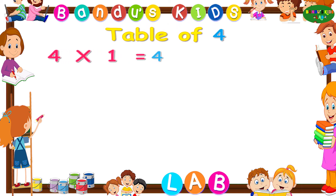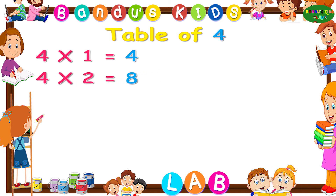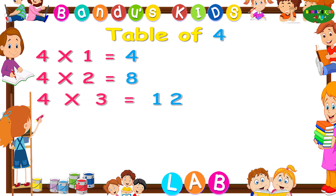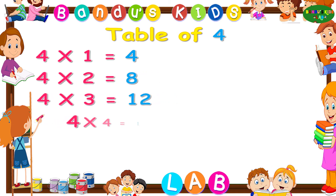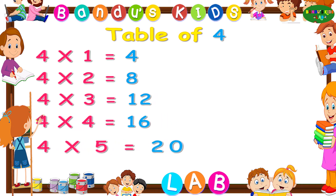Four ones are four. Four twos are eight. Four threes are twelve. Four fours are sixteen. Four fives are twenty.